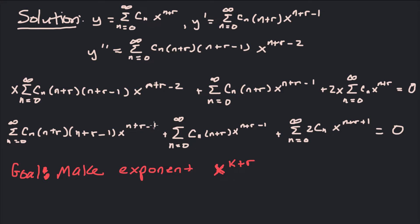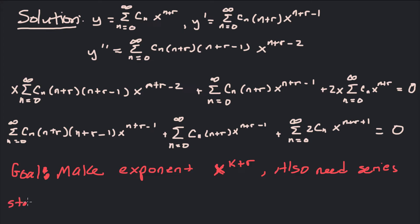In the first series we let k equal n minus 1, same thing in the second. In the last one we let k equal n plus 1. Once we have the same exponent x^(k+r) and all series starting at the same index, we can combine them all into a single series. So let's re-index the series.